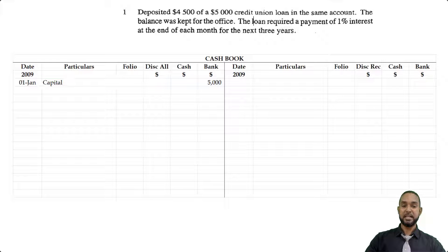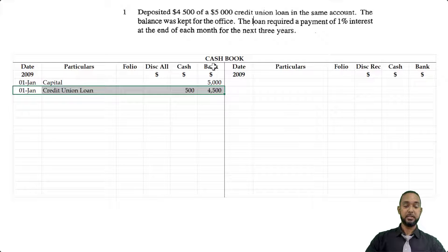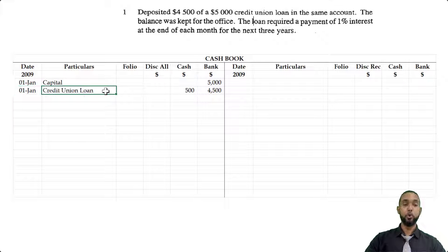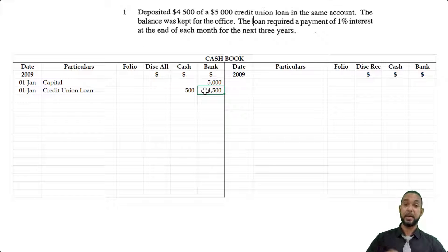Because the assets of cash and bank are both increasing, we're going to put the items on the debit side. Under the bank column, $4,500, because that's how much we put into the account. And the $500 balance was kept as cash. Where did the money come from? From a credit union loan. It's on the debit side because both assets of cash and bank are increasing, and to record an increase in an asset, you need to debit the asset account.